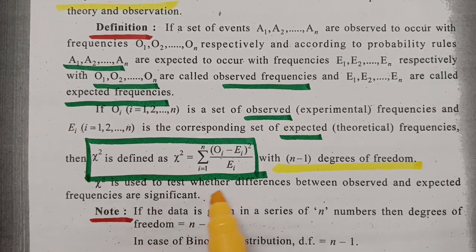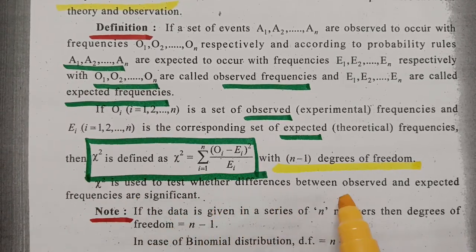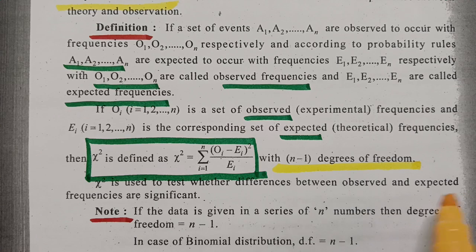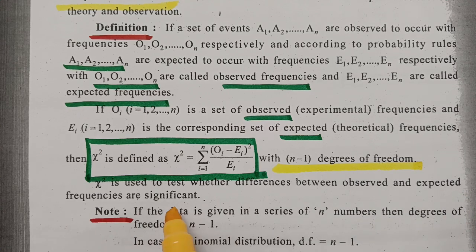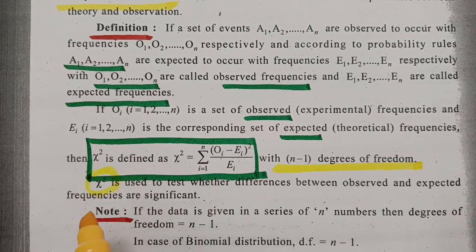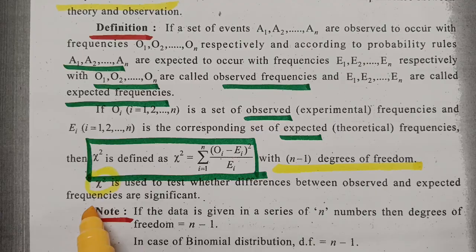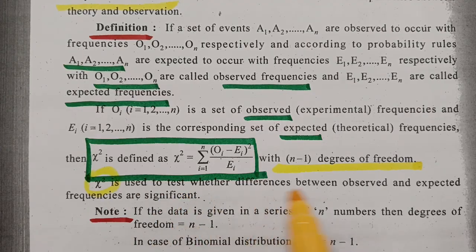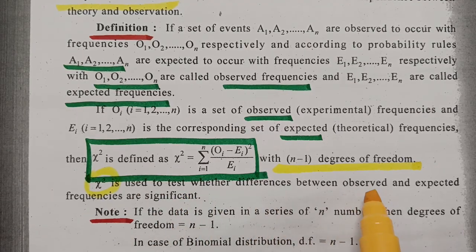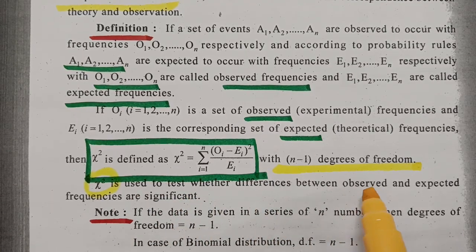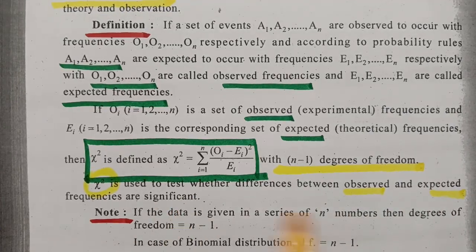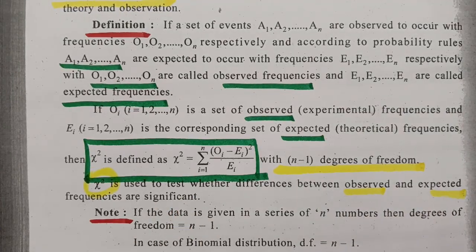Chi-square is used to test whether the difference between the observed and the expected frequencies are significant. This chi-square test is important in determining whether the differences between the observed value and the expected value are significant or not.